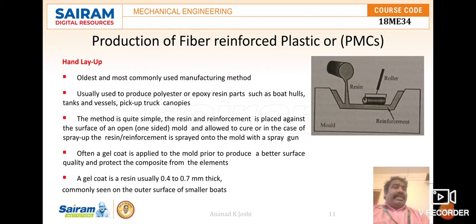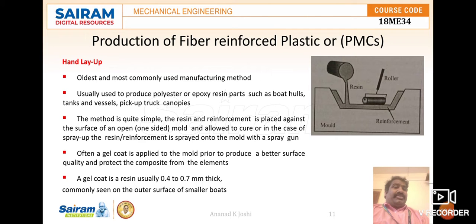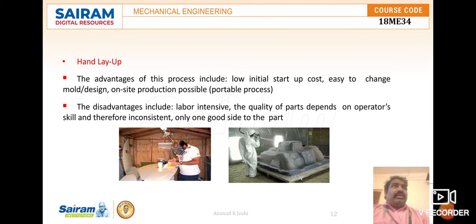The resin and reinforcement are placed against the surface on the open side and then allowed to cure. In the spray-up variant, resin and reinforcement are sprayed onto the mold with a spray gun. A gel coat is applied to the mold prior to production to achieve better surface quality and protect the composite. The gel coat resin is usually 0.4 to 0.7 mm thick and is commonly seen on the outer surface of smaller boards.